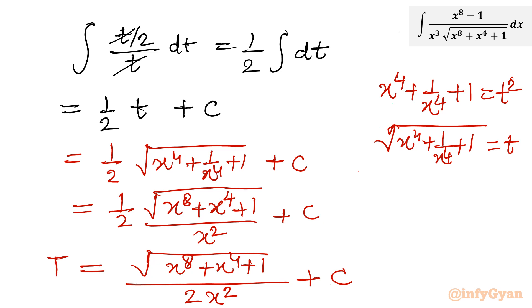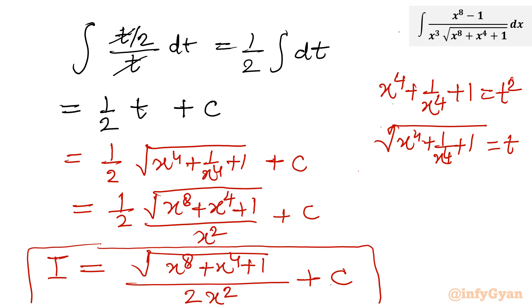So ultimately this is our final answer: the square root of x^8 + x^4 + 1 divided by 2x^2, plus the integration constant c. This is the integration of the given function. I hope this video will be meaningful to you. Do not forget to like, share, and subscribe. Bye bye till the next video, friends.